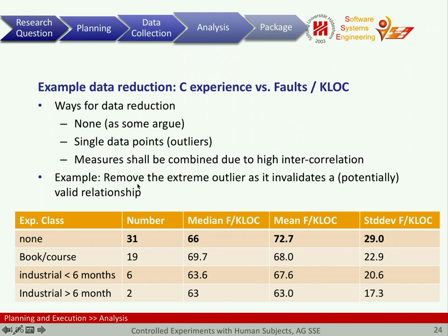We remove the extreme outlier because it may actually invalidate a potentially valid relationship — it may disturb the data to the extent that we are no longer seeing any pattern that is truly in the data. As a result, the median is more or less stable, still in between the book and the industrial case. We have a mean of 72 now, just a little bit higher than for the other categories, and the standard deviation was basically half as high with just a single removal. This is a much more plausible and acceptable distribution of the data.